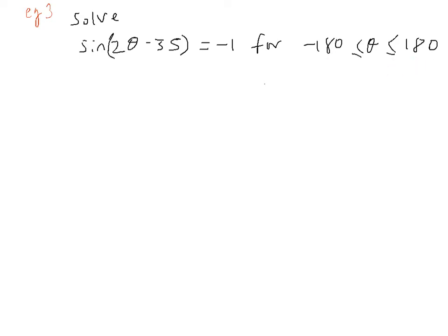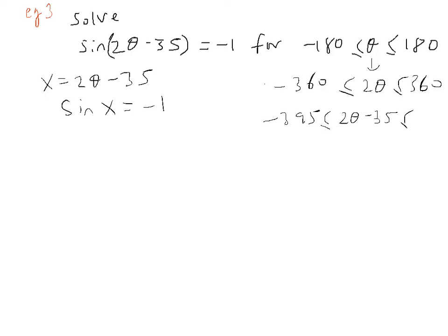We can start just by simplifying the problem and by making x equals 2 theta take away 35. So what we've got is sine of x equals minus 1. However, if we do that we've also got to change our limits from theta to x. So 2 theta will give us minus 360 to 360. 2 theta take away 35, which is x, will then give us minus 395 and 325.